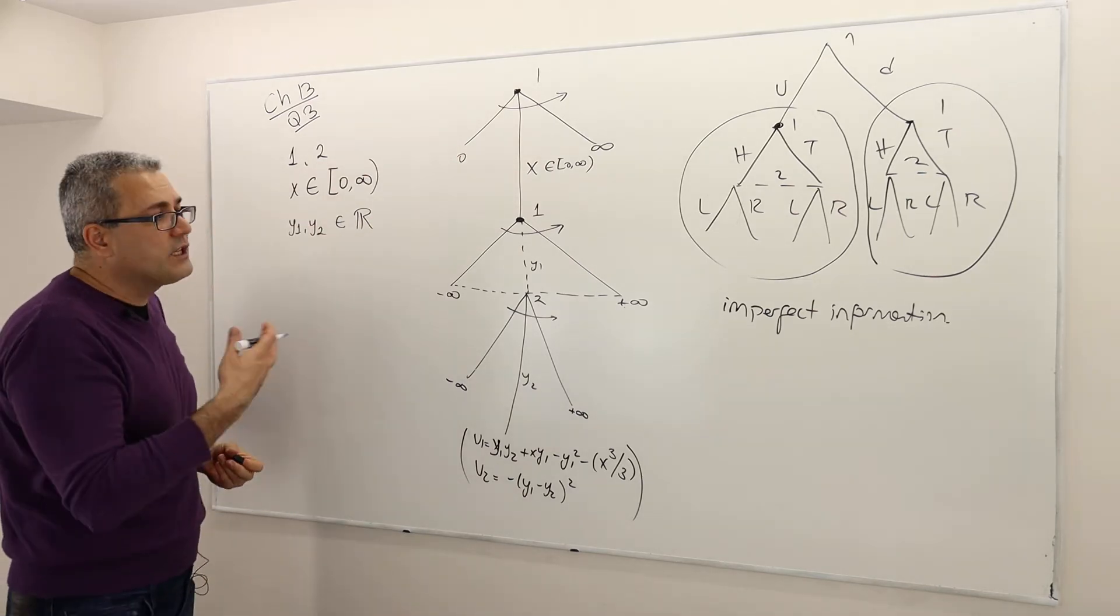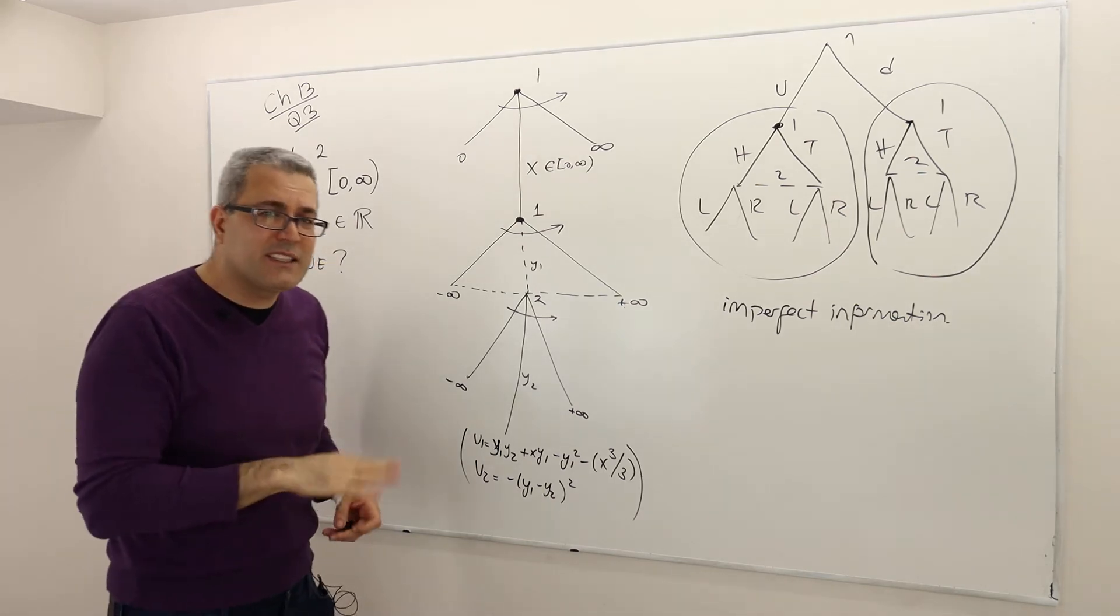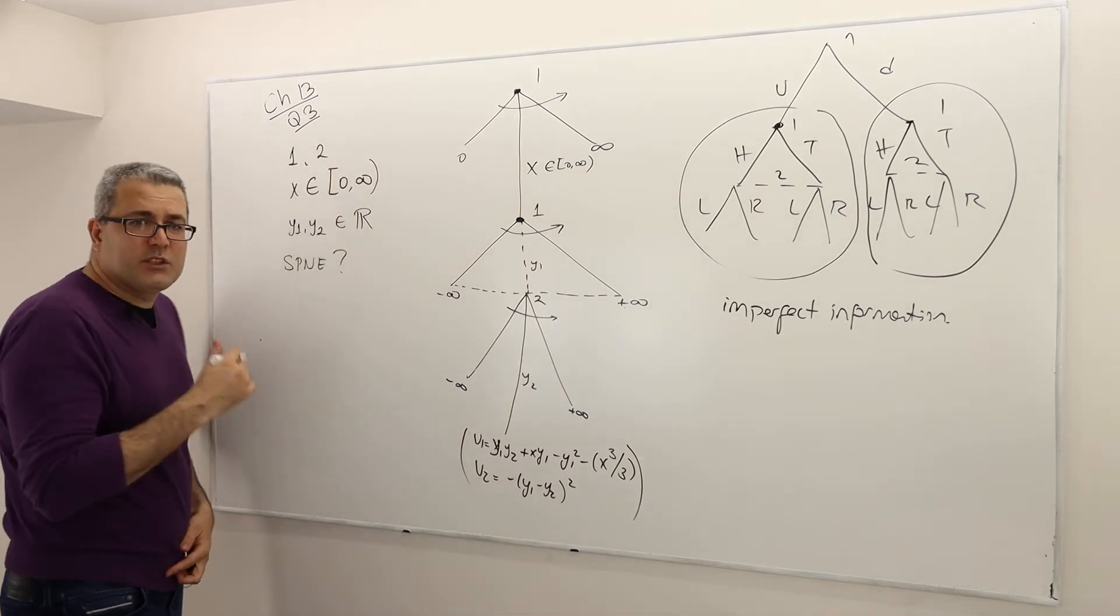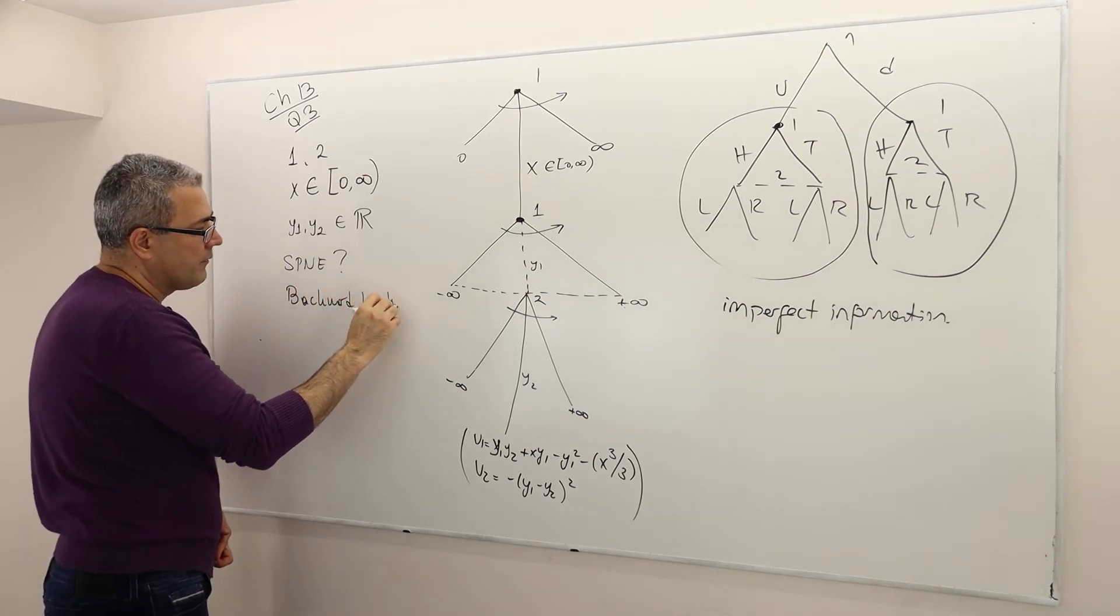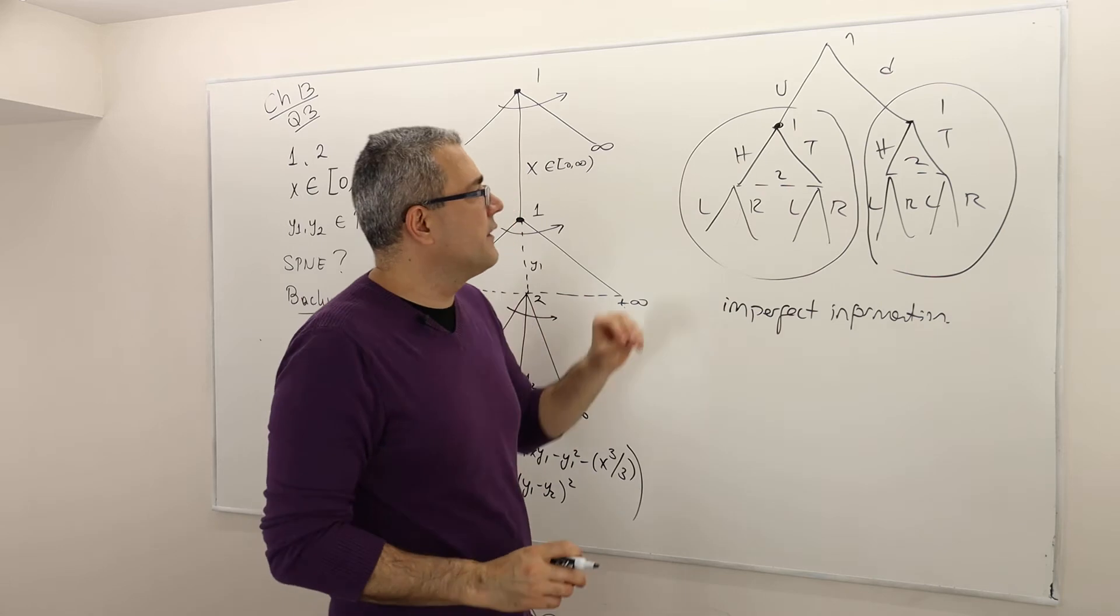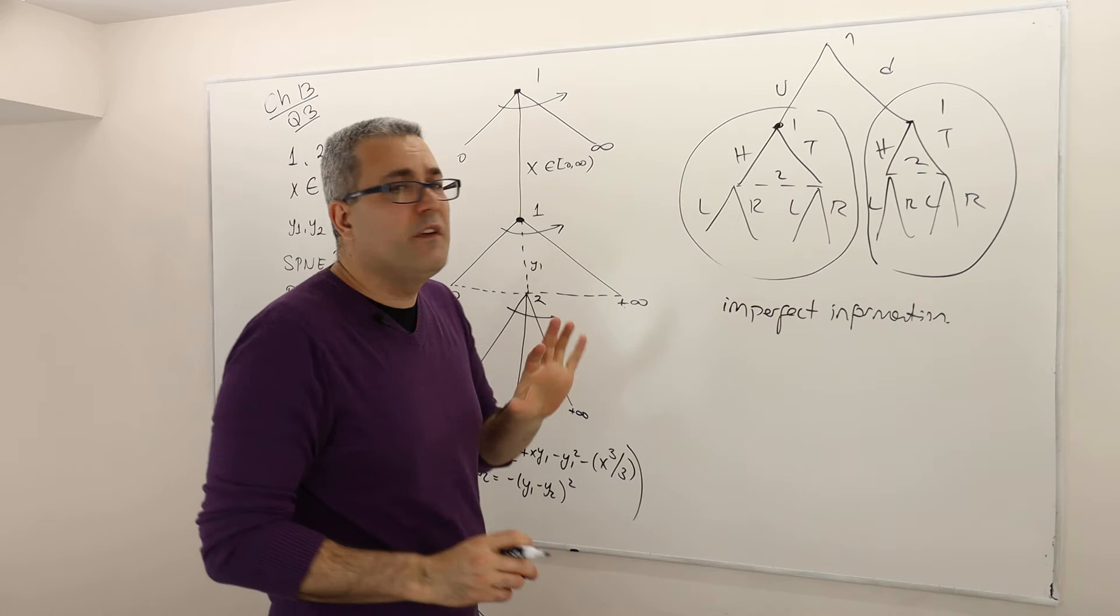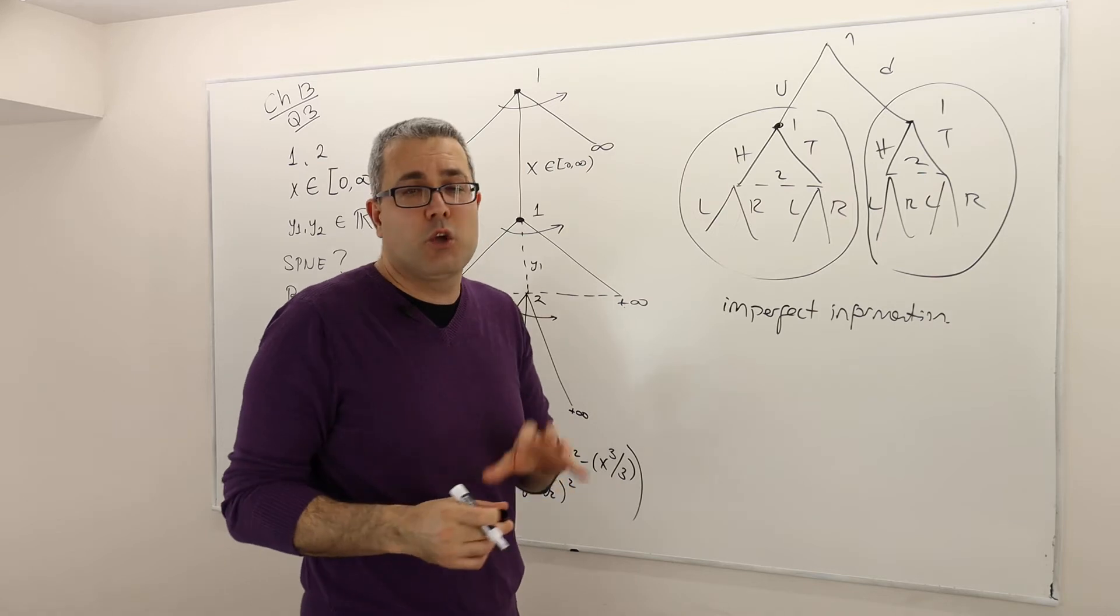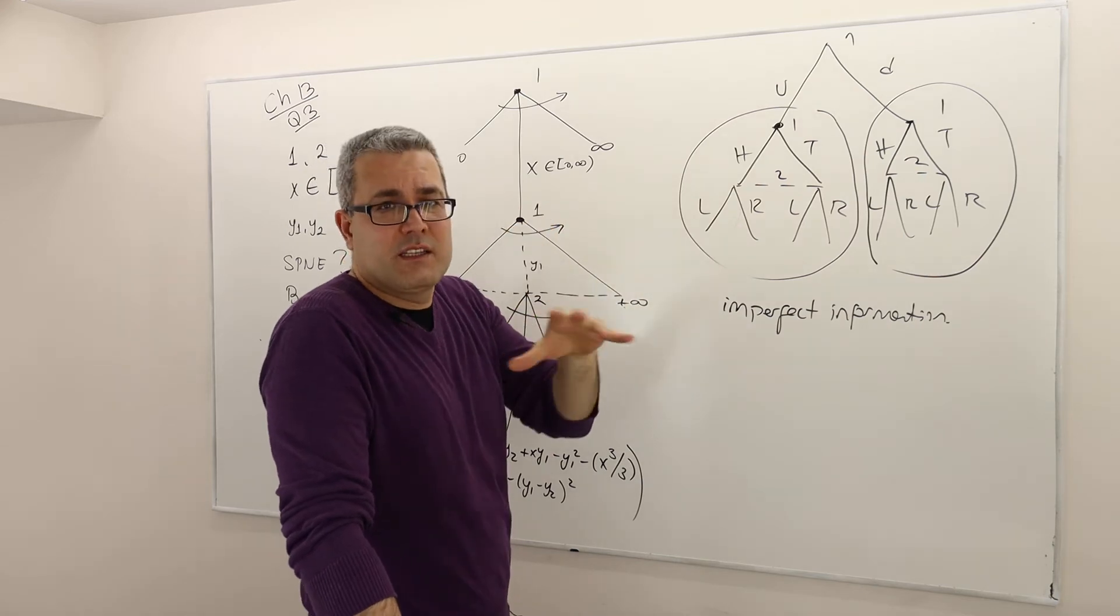The question is, can I solve this game for subgame perfect Nash equilibrium strategies? Again, the question is not asking this, but I would like to talk about it anyway. So here, yes, we can. We can apply the idea of backward induction. How are we going to do this? Well, here, the important thing is, this week we're going to talk more about this. So if it is not perfectly clear now, fine, because next week's videos hopefully are going to make it clearer.